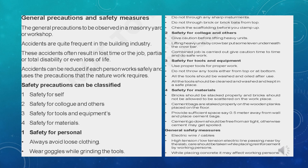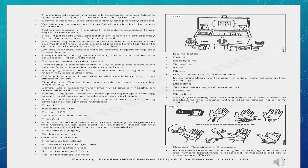General safety measures: be careful of electrical wires and cables. High tension or low trench electric lines passing nearby the work area are hazardous. While placing concrete, it may affect workers nearby. Throwing face materials, brick parts, or broken blocks may lead to injury to workers below. Scaffolding should be erected firmly and properly placed. Walking on parapet walls may cause a fall due to imbalance. Take care while using ladders as they may slip. An unguarded lift pit may cause a fatal accident. Bar bending work — bar benders who use shortcut methods to throw surplus steel pieces from the top floor to the ground may cause fatal injuries.